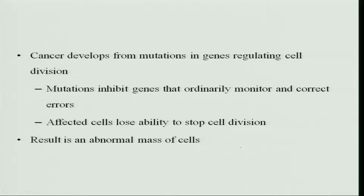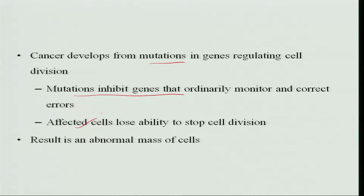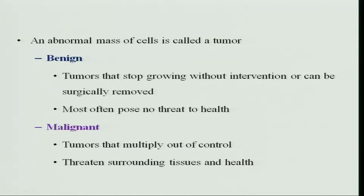But when cancer occurs, it develops mutations from the genes regulating cells, and the cells divide based on changes in those mutations. These mutations inhibit the genes that ordinarily monitor and correct errors. The affected cells lose the ability to stop cell division, and once cell division starts it goes on multiplying and multiplying, resulting in an abnormal mass of cells.